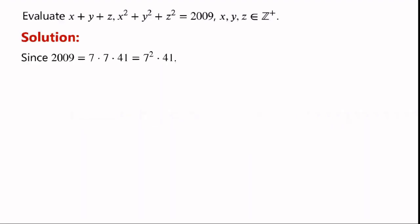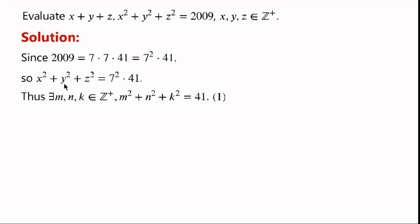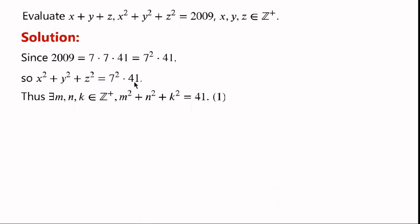Since 2009 can be written as 7 times 7 times 41, which equals 7 squared times 41. So x squared plus y squared plus z squared equals 7 squared times 41. Since the left-hand side is the sum of three perfect squares and the right-hand side is a perfect square times 41, 41 must also be the sum of three perfect squares.